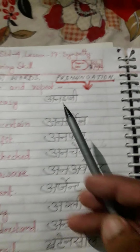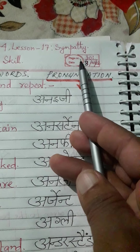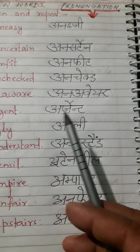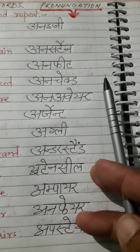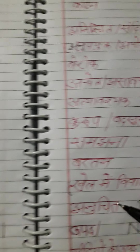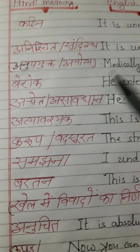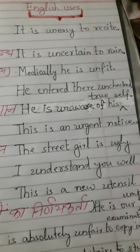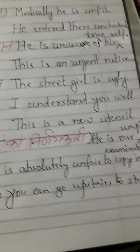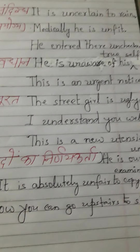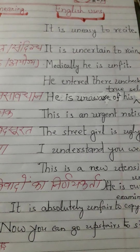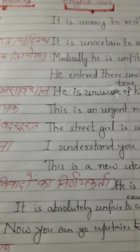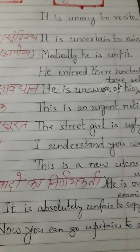In this way, you have to arrange the given new words belonging to Lesson 17 named Sympathy. In another column write the correct pronunciation, in the next column write their Hindi meanings, and at last write their usage accordingly. Enjoy it and wait for the next session.